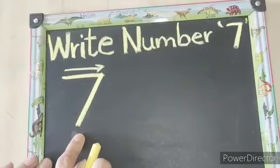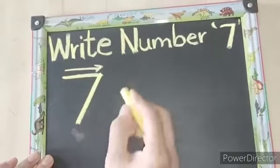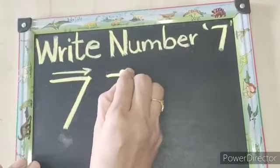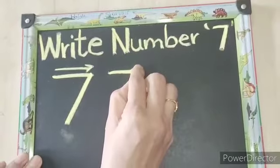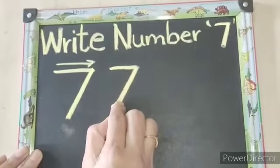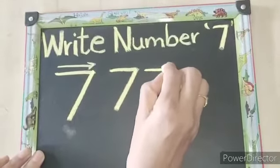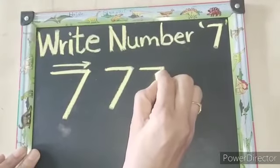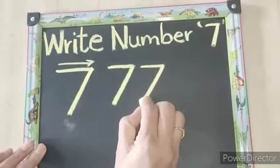So this number we have to practice on slate. Slipping line to right, without lifting your pencil, slant line to left.